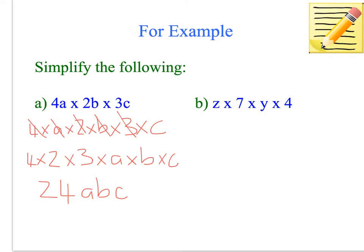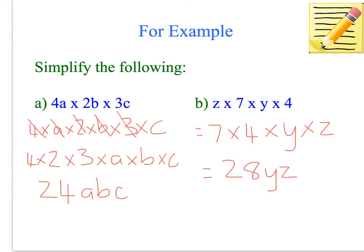The next one is already expanded out as much as it can, so we don't actually have to do the first step. We do have to do the second step, which is writing the numbers first: 7 times 4. Then we write the variables in alphabetical order: times Y, times Z. Then we work it out — 7 times 4 is 28, so the answer is 28YZ.